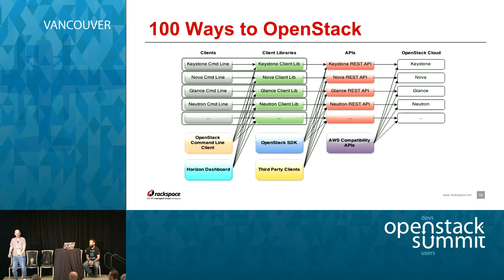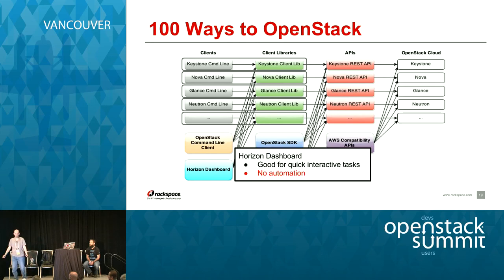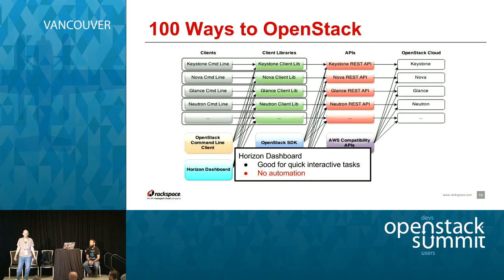The final client we have is Horizon, the dashboard. The dashboard also goes through the individual Python libraries. This is great if you need to do something quick manually, but automation is not there — you can't use it for anything that's really building a workflow.